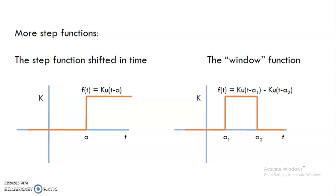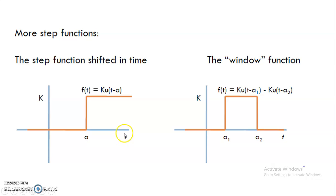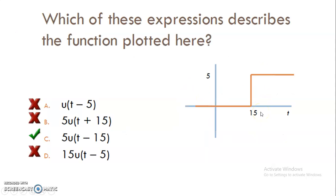If the function has been delayed, then instead of t it will be t minus a — shifted by a delay of a. If it is advanced, it will be u of t plus a. As an example: if the value of k is 5 and the delay is 15, then the answer of the step function will be 5 times u of t minus 15. Similarly, if a function is advanced by minus 4 and k equals 8, it is expressed and plotted as 8 times u of t plus 4.